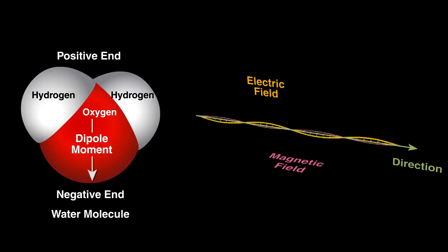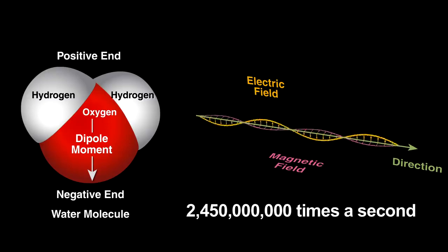By definition, the waves have the electrical and magnetic fields that change direction rapidly. For this oven, the direction of the fields change 2.45 billion times per second.